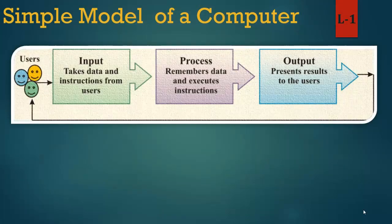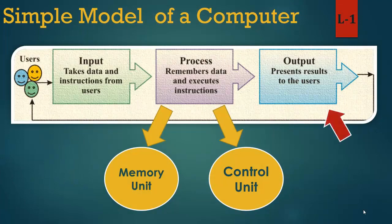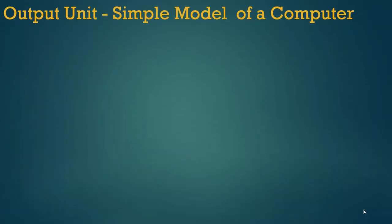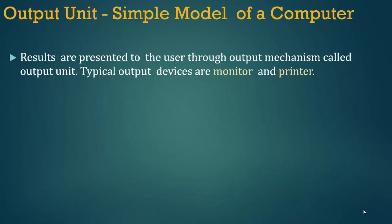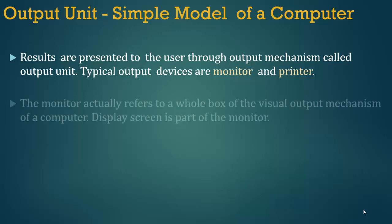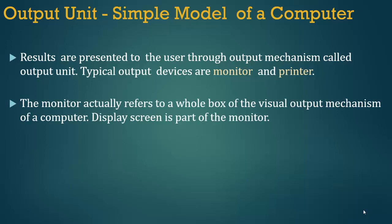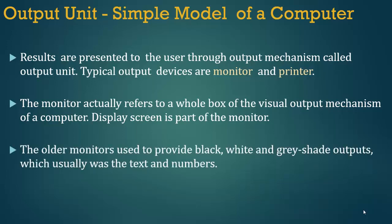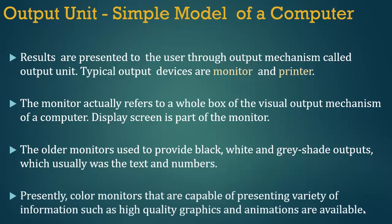Now we learn output in detail. Output unit — simple model of a computer. Results are presented to the user through the output mechanism called the output unit. Typical output devices are the monitor and printer. The monitor refers to the whole box of the visual output mechanism of a computer. The display screen is part of the monitor. Older monitors provided black, white and grey shade outputs, usually text and numbers. Presently, color monitors capable of presenting high quality graphics and animations are available.